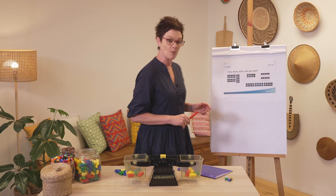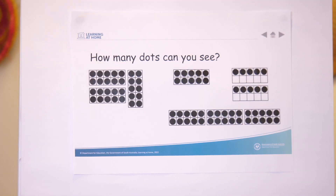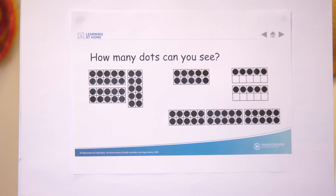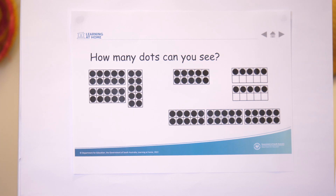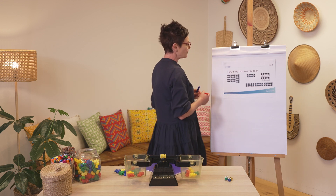Let's get going. Let's start with a number talk warm-up. How many dots can you see? How many parts can you see? What is the whole number you can see, and how will you write that as a number sentence? Let's have a look at two different ways that I can see these dots.